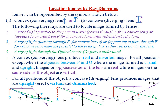Today we are looking at locating images by ray diagrams. Lenses can be represented by the symbols shown below. It is important to note that lenses is simply the plural form of the word lens. In our previous class we discussed the two types of lenses — convex lenses, which are also called converging lenses, and concave lenses, which are also called diverging lenses.